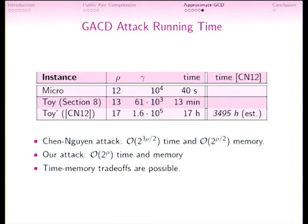We implemented this attack and compared with the second best attack — the Cohn-Nguyen attack, which requires exhaustive search of the first random noise to get an exact multiple. We multiplied their running time by the exhaustive search time, and for the parameters tested, our attack is much faster: only 17 hours instead of 3,000 hours. However, our attack requires more memory — 2^ρ memory instead of 2^(ρ/2) — so we cannot go much further, though time-memory trade-offs are still possible.